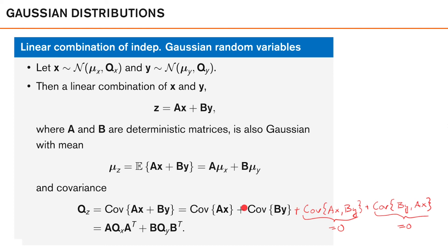Since A and B are deterministic, we can move them outside the covariance, but instead of appearing as simple factors as in the mean calculation, they appear squared. As we're dealing with matrices, we get A times Q_x times A transpose, plus B times Q_y times B transpose. This is a general rule: the covariance of a deterministic matrix A times a random vector equals A times the covariance of the random vector times A transpose. If you feel this was covered quickly, I would highly recommend deriving this expression yourself using the definition of covariance presented at the beginning of this lecture, and also brushing up on rules related to the expectation operator.